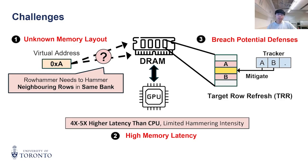Third, although hardware changes take a long time, modern DRAMs have come up with defenses against Rowhammer, such as Target Row Refresh, and we will need to bypass such defenses to receive bit flips.